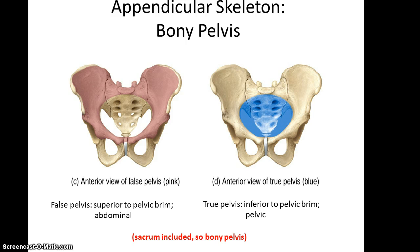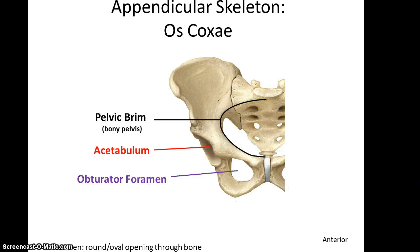There are two kinds of pelvis. You've got the false pelvis, which is superior to the pelvic brim and would have the very inferior portion of the abdominal cavity resting on it. And then the true pelvis, which is inferior to the pelvic brim and is where the pelvic cavity would be located. The pelvic brim is basically an imaginary line or edge running around the main open area, going from the sacrum all around to the pubic symphysis.